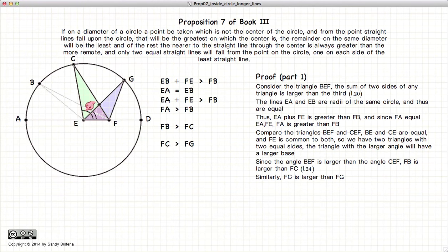Using the same arguments again, the green triangle has a larger angle than the purple, they have two sides that are equal, these two being the radius, these two being common, gives us that CF is larger than GF.